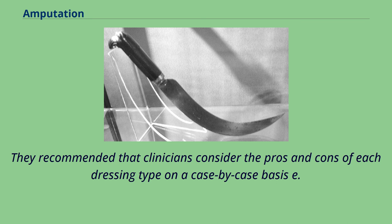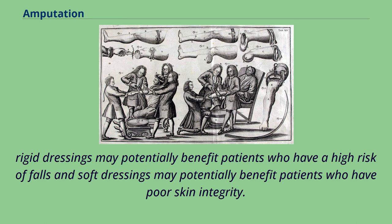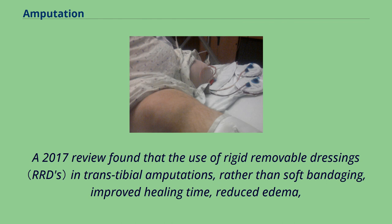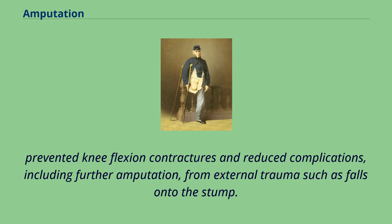They recommended that clinicians consider the pros and cons of each dressing type on a case-by-case basis. For example, rigid dressings may potentially benefit patients who have a high risk of falls, and soft dressings may potentially benefit patients who have poor skin integrity. A 2017 review found that the use of rigid removable dressings in transtibial amputations, rather than soft bandaging, improved healing time, reduced edema, prevented knee flexion contractures, and reduced complications including further amputation from external trauma such as falls onto the stump.